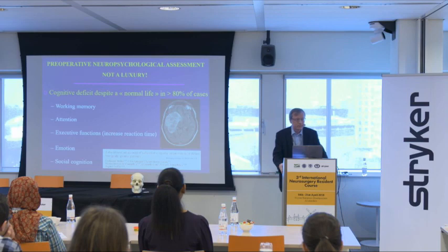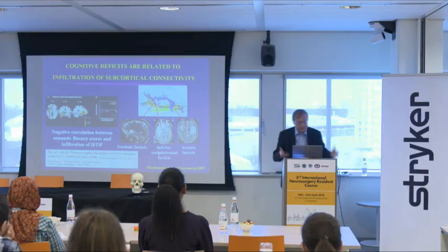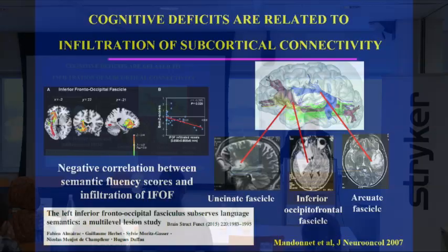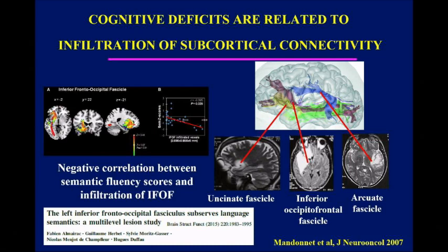Definitely, know the white matter tract, because this is the limitation of neuroplasticity. Too much invasion of the optic tract posteriorly, of the ILF, of the arcuate fascicle posteriorly, the anterior part of the stratum sagittal in the left hemisphere — no way. I will not remove the tumor; I will not be efficient. In this case, just biopsy, and then chemotherapy. And not radiotherapy, to avoid irradiating the convergence of five pathways.